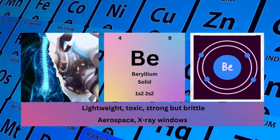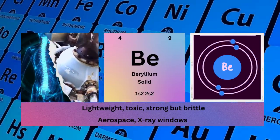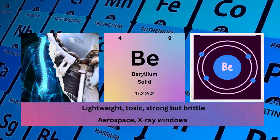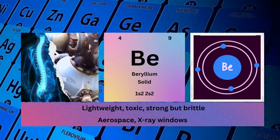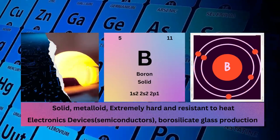Electronic configuration 1s2 2s2. Physical properties: lightweight, toxic, strong but brittle. Beryllium uses: in aerospace, x-ray windows. Boron: atomic number 5, mass number 11.